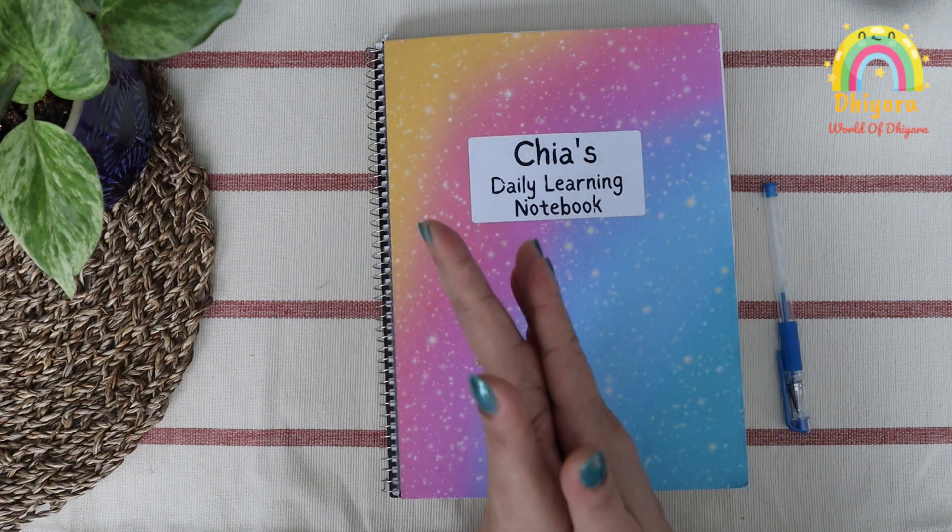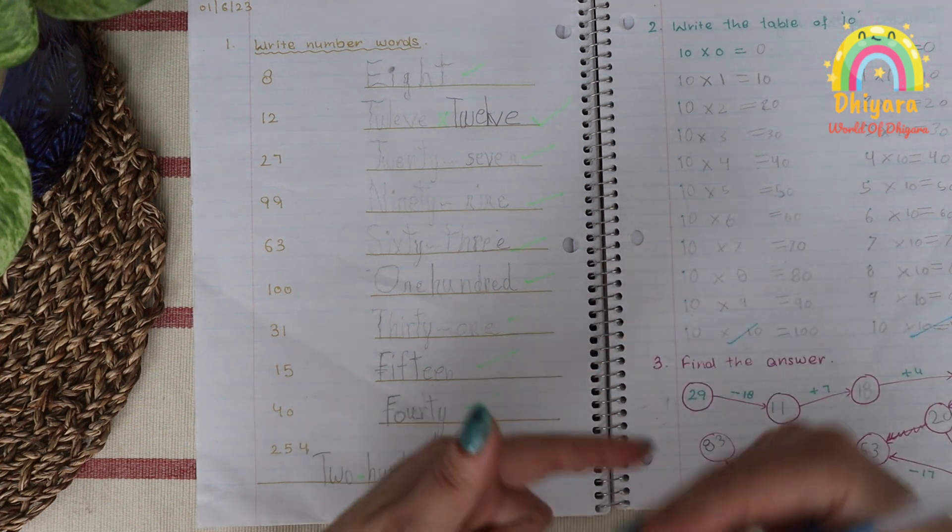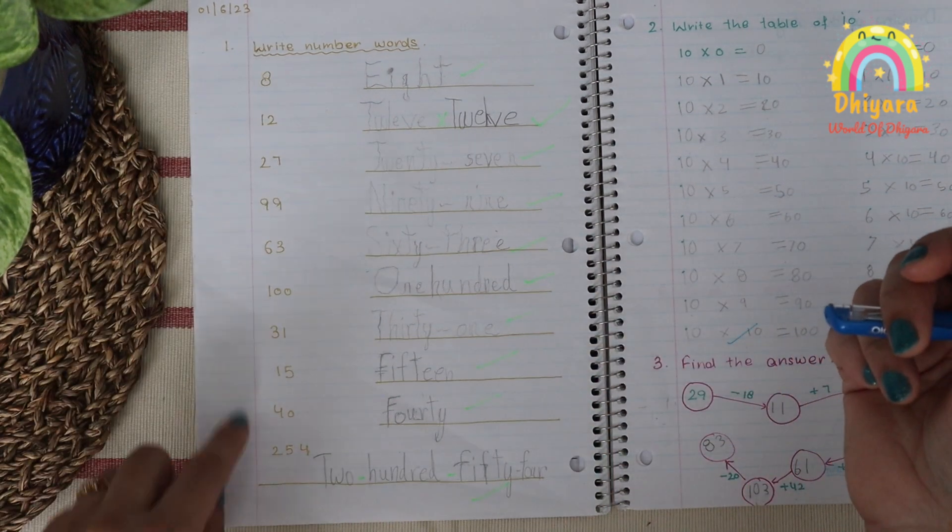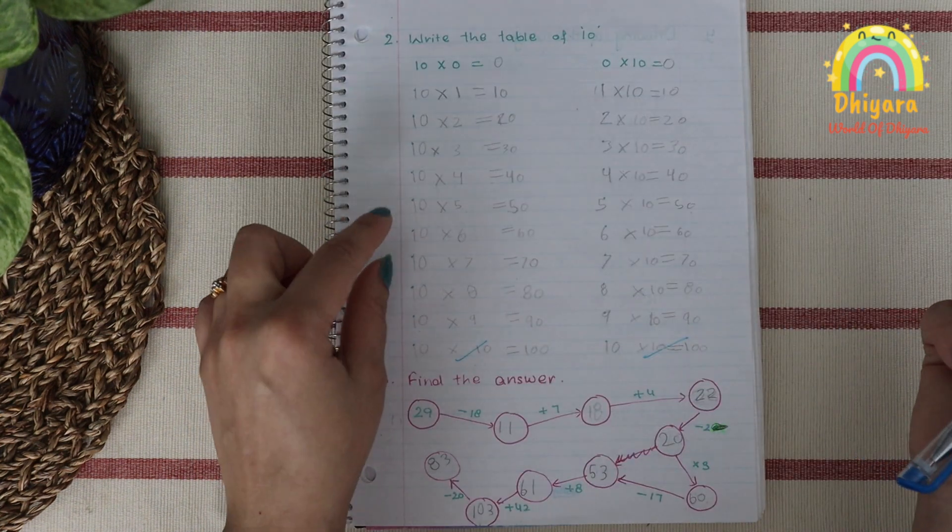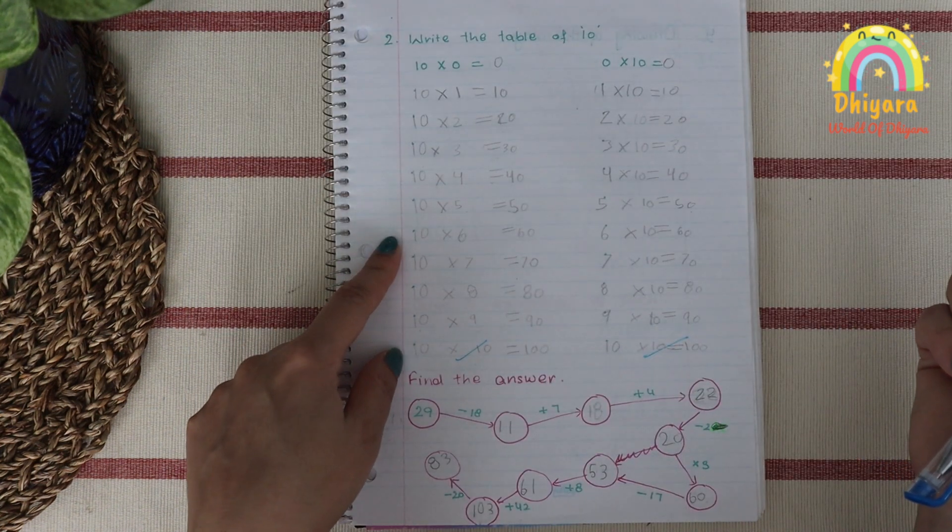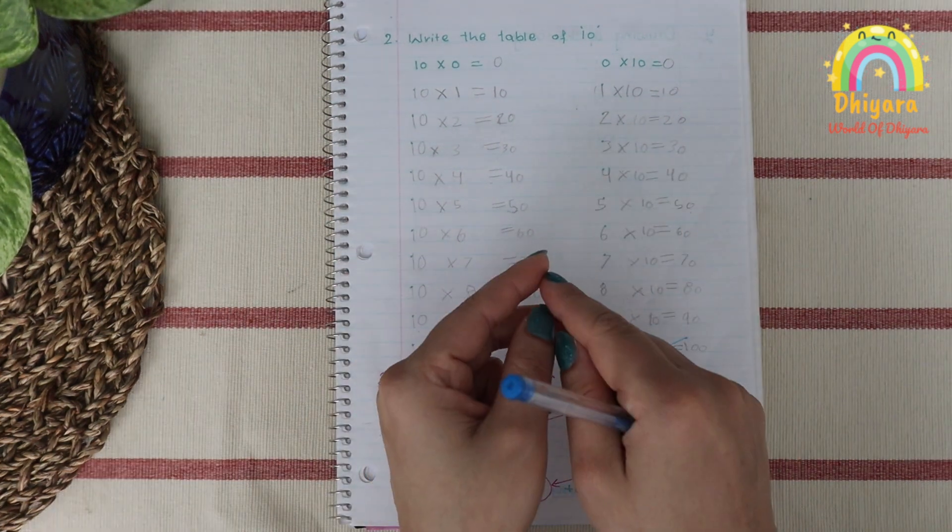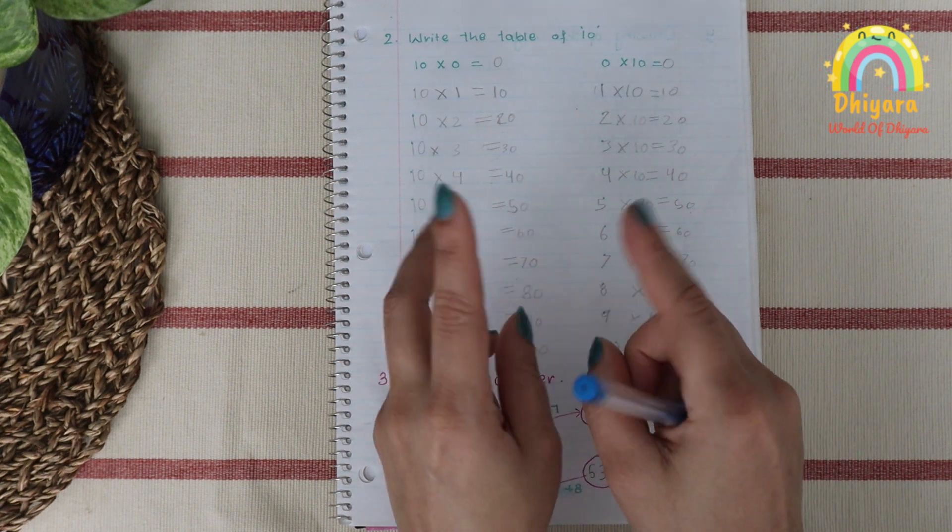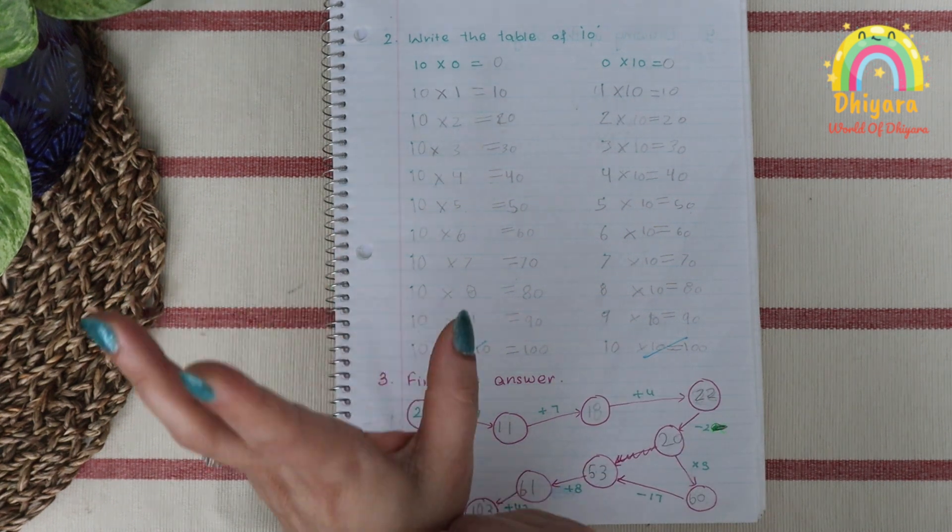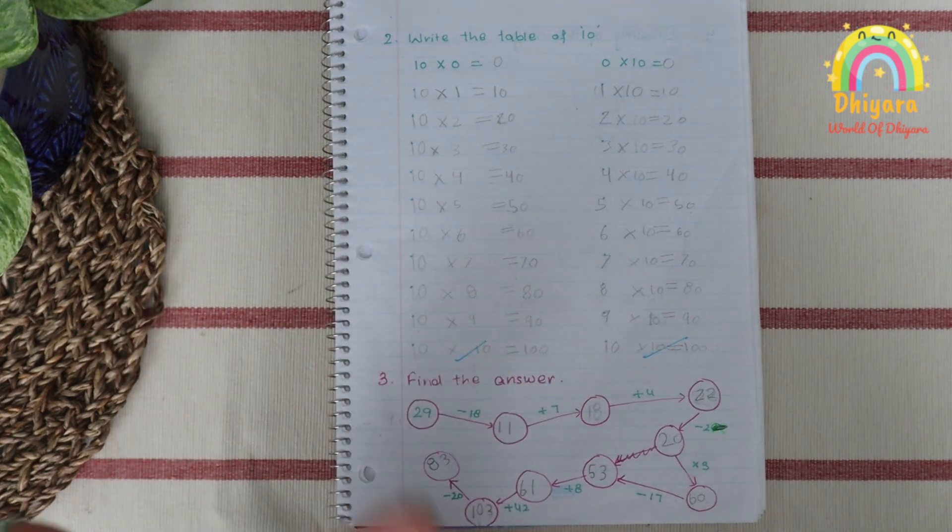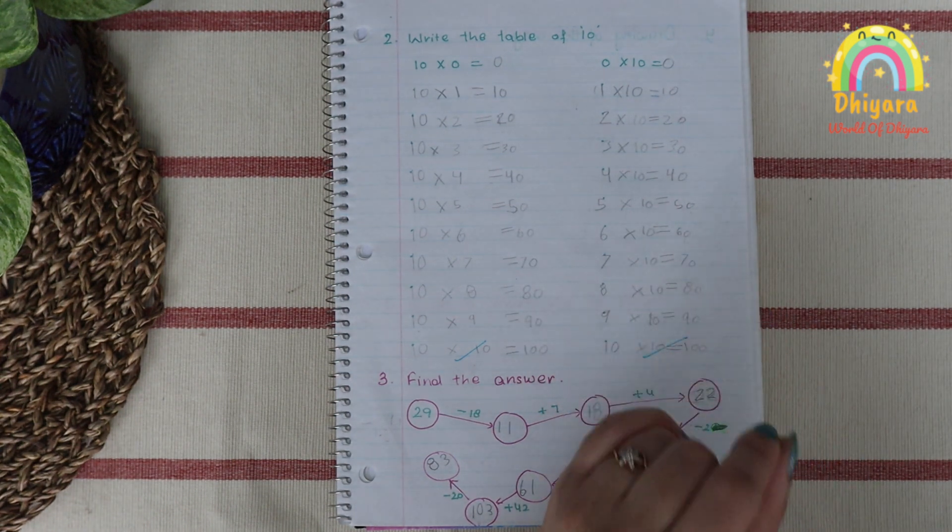Now let's start with today's video. I revised number words concept with Chia. Here I have written number words randomly. Next I have given Chia the 10 table. I have written it in reverse order because the child should know that when we multiply and interchange the numbers, the answer will come the same. So I suggest you write in reverse order so they will clear the concept.